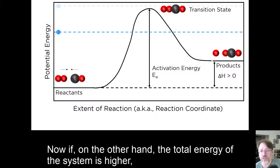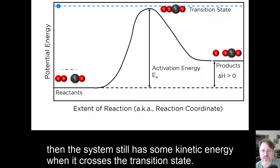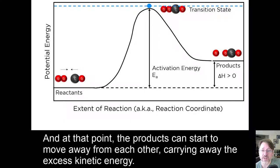Now if, on the other hand, the total energy of the system is higher, then the system still has some kinetic energy when it crosses the transition state. And at that point, the products can start to move away from each other, carrying away the excess kinetic energy.